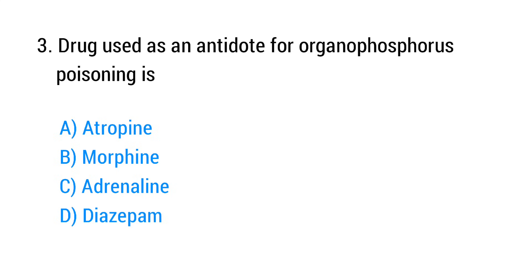Question number 3. The drug used as an antidote for organophosphorus poisoning is? The right answer is option A: Atropine.